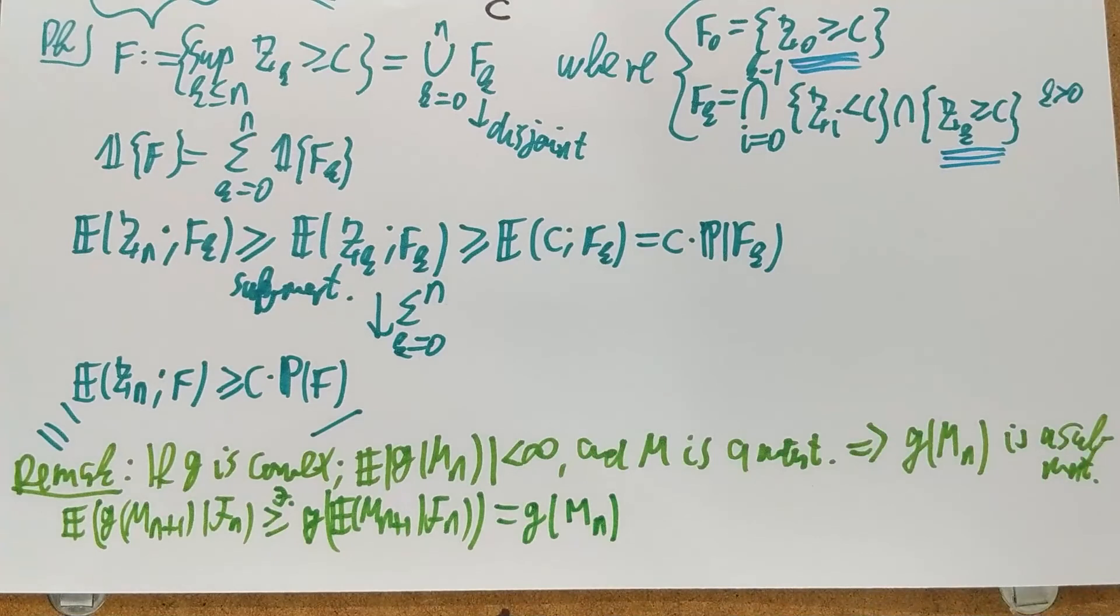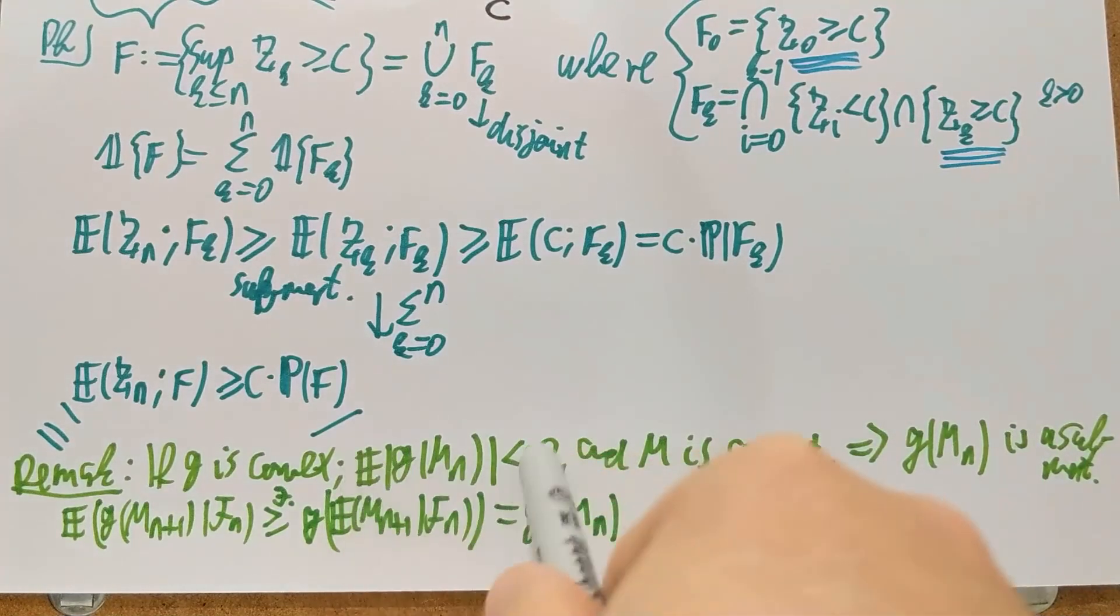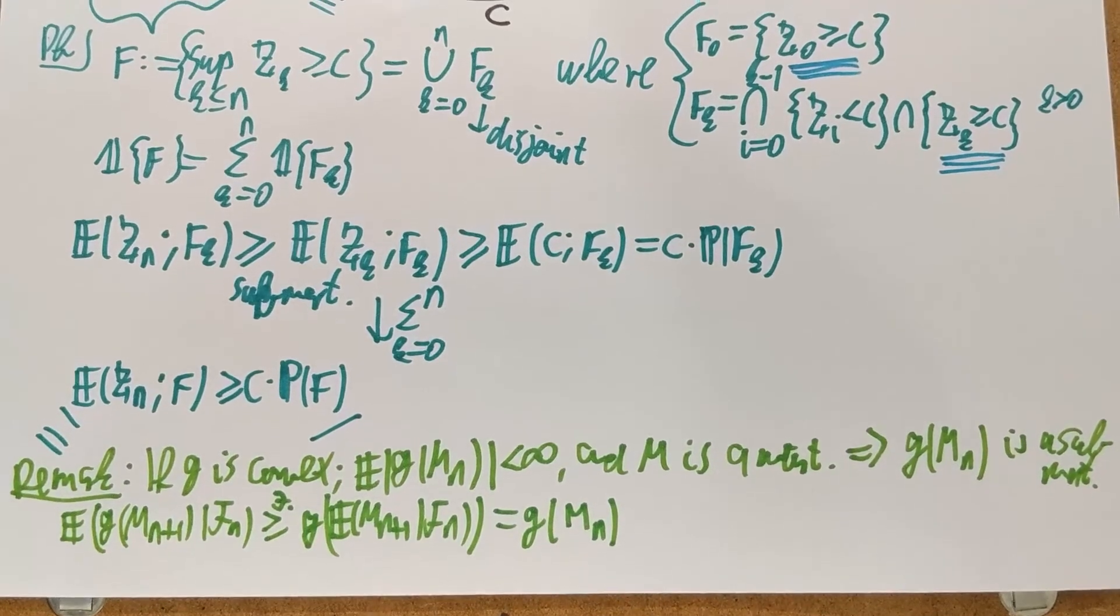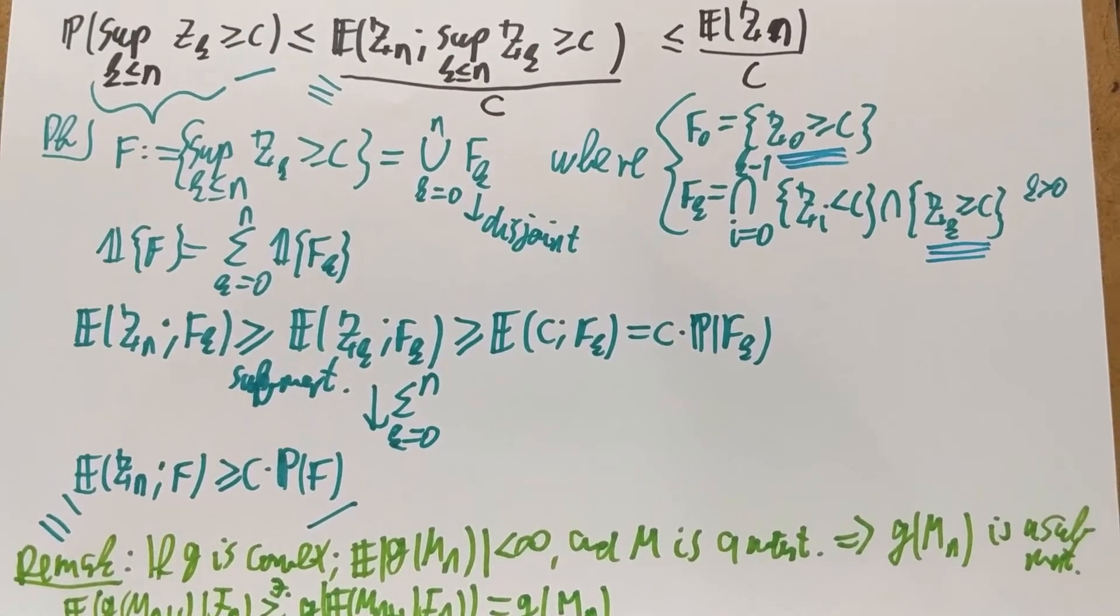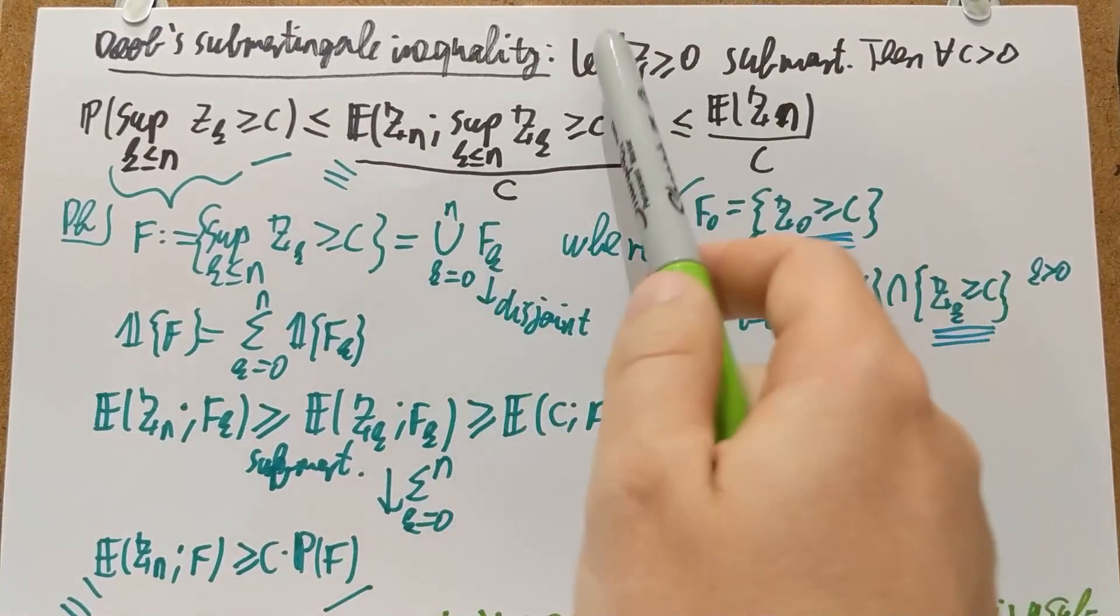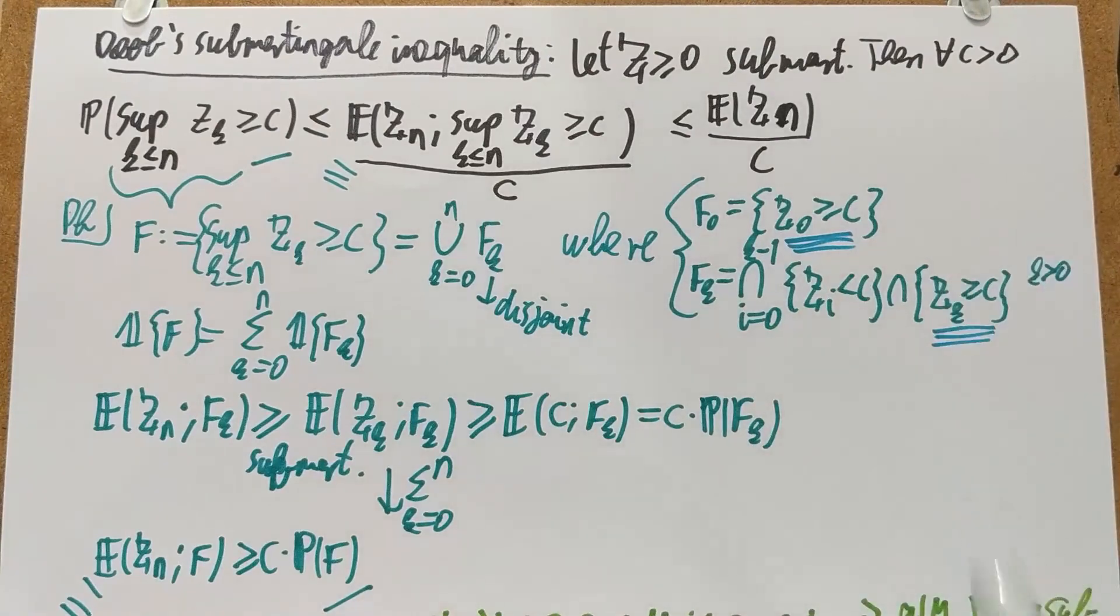And so you have the martingale property. And of course you have the L1 property here, and of course it's adapted as before. So that shows that if you have a martingale and you take a convex function of it, it becomes a submartingale. Now, if the convex function is furthermore non-negative, then you immediately satisfy the conditions of the submartingale inequality, because now you have a non-negative submartingale, and then everything works.